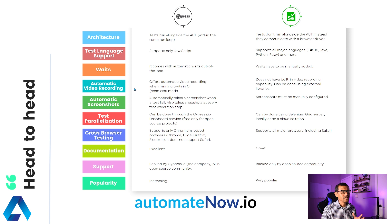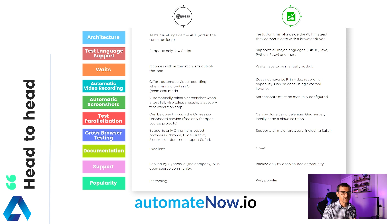I put together 10 key metrics to compare them against. The first one is architecture. For Cypress, tests run alongside the application under test, meaning that they're running in the same run loop. This also means that your tests are going to be faster, because there is no middleman. On the other hand, Selenium tests do not run alongside the application under test — instead, they communicate with the browser driver, which is the middleman. Since Selenium tests have to interact with browser drivers, this makes them a little bit slower compared to Cypress tests.